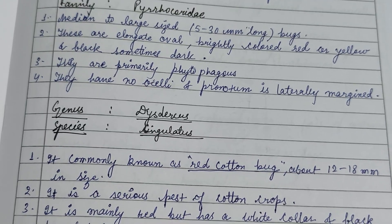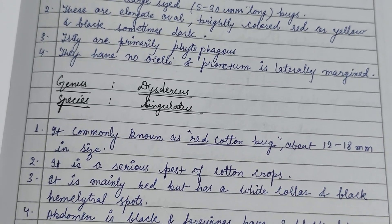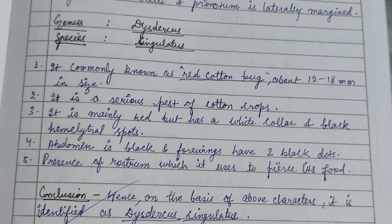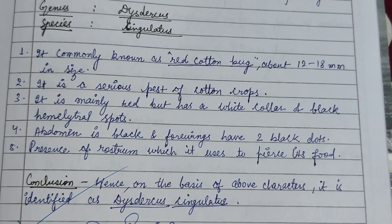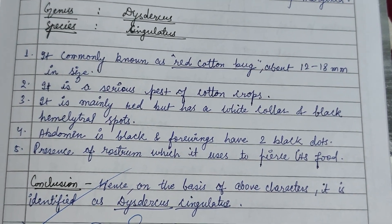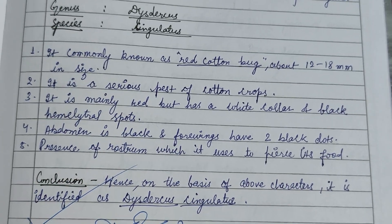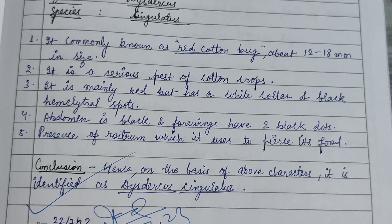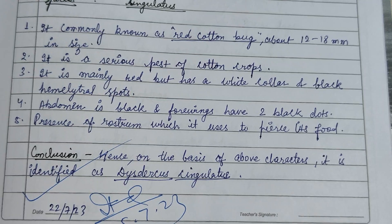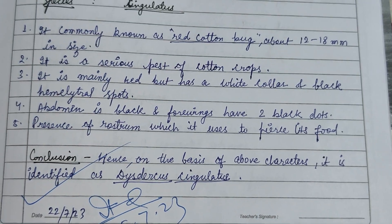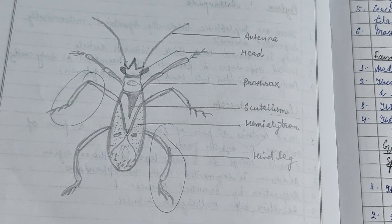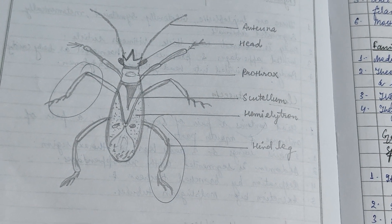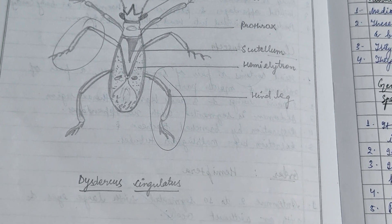The characteristic features of Dysdercus singulatus: they are serious pests of cotton crops. They are mainly red but have a white collar and black hemilateral spots. They possess a rostrum which they use to pierce and suck food. This is a figure of the red cotton bug, Dysdercus singulatus.